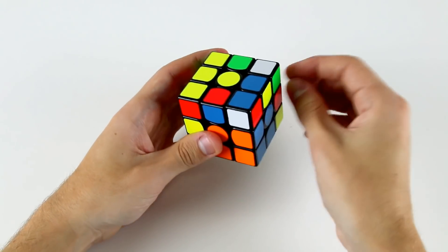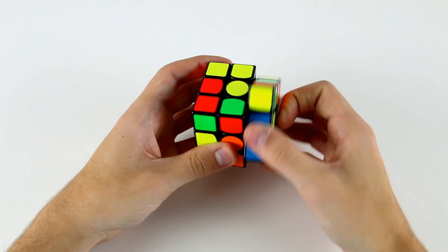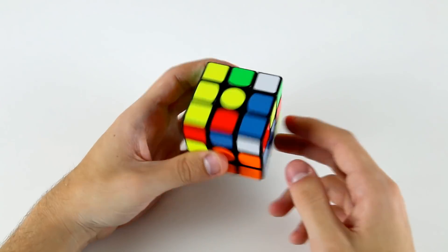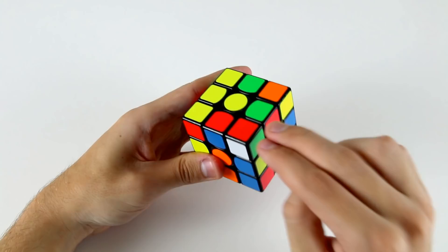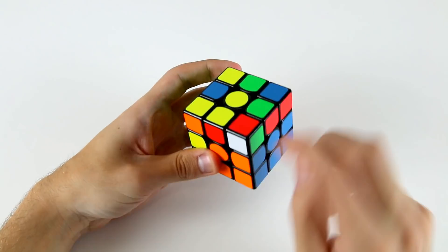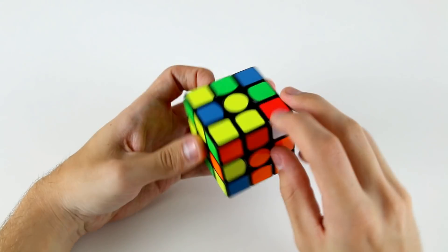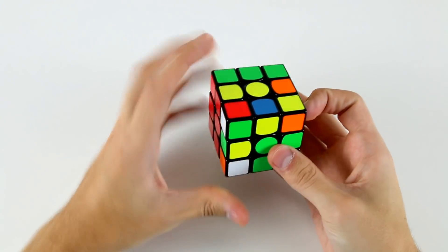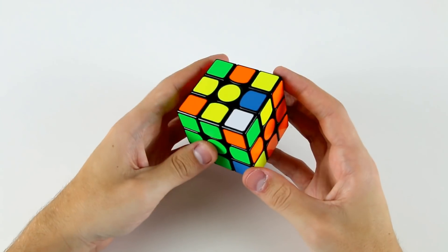Then we've got these two which we can insert into the back right slot without a rotation. As I was doing that, I noticed that these two came into the top layer. I would immediately go ahead and solve these two next.